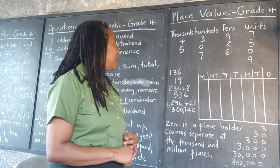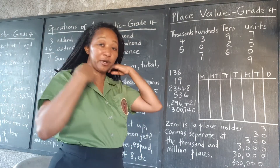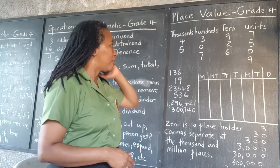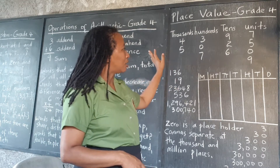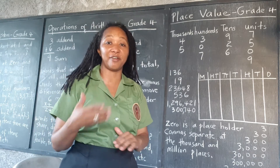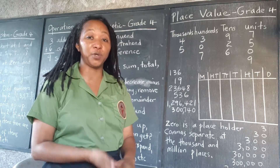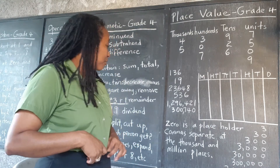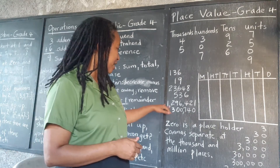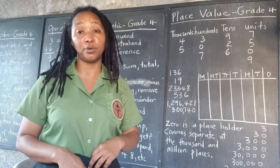Hello scholars, this morning we're going to look at place value at the Grade 4 level. In the number system, numbers can go up to infinity — the numbers can be very, very big, too big for you to count, too big for you to name. At this level we're going to focus on numbers that are in the millions range. The highest place value we're going to go right now is millions.